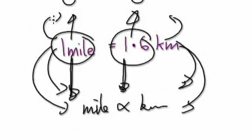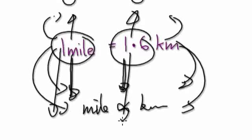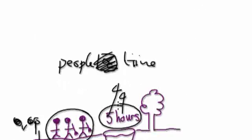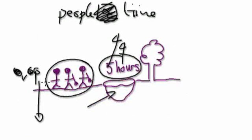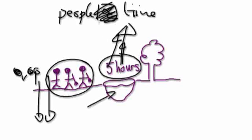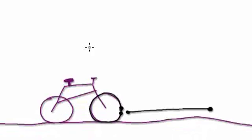In the previous two cases, when you increase one thing, the other also increases. Whereas in this case, if you increase the number of people, you decrease the time. So you can't use 'directly proportional' in this case.